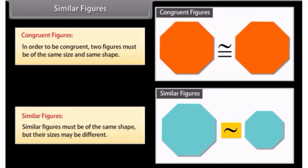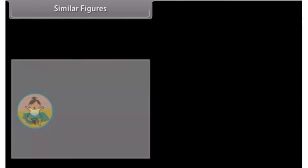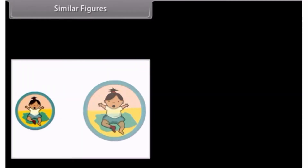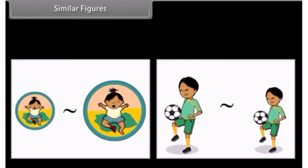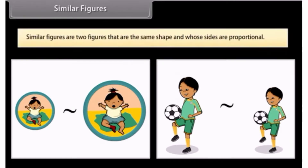This is the symbol that means similar. When you have a photograph enlarged, you make a similar photograph. A photograph can also be shrunk to produce a slide. So, similar figures are two figures that are the same shape and whose sides are proportional.